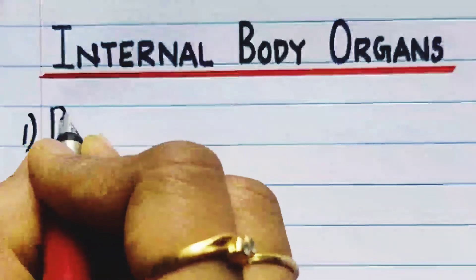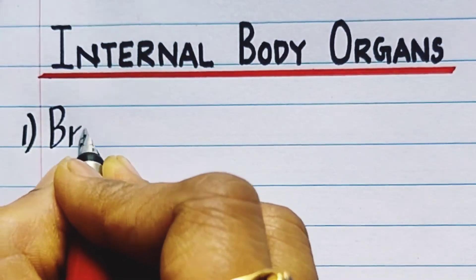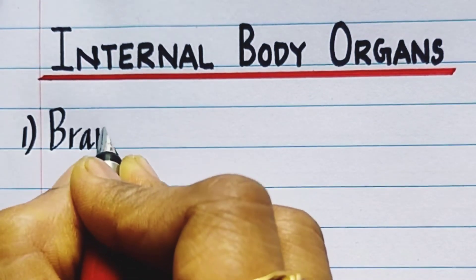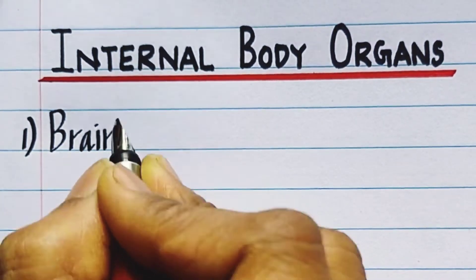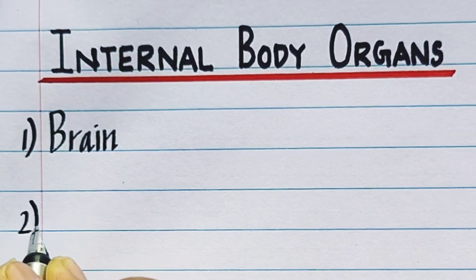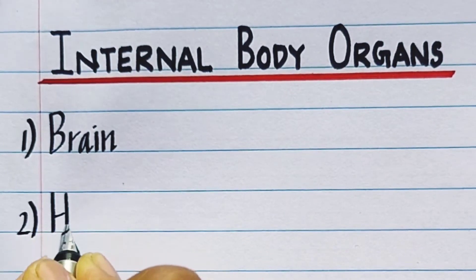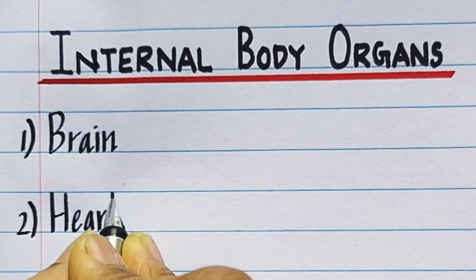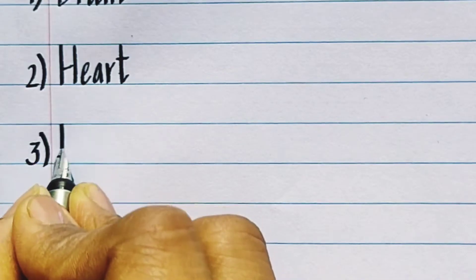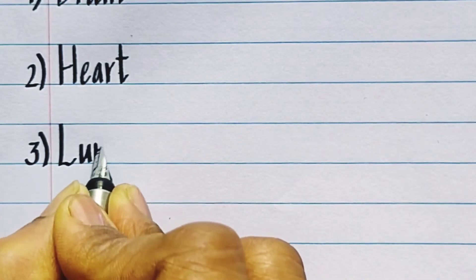Internal body organs name. First one is brain, B-R-A-I-N, brain. Second one is heart, H-E-A-R-T, heart. Third one is lungs.